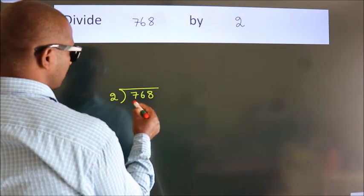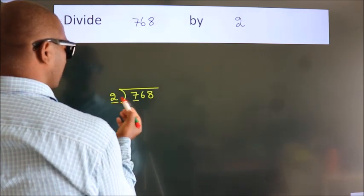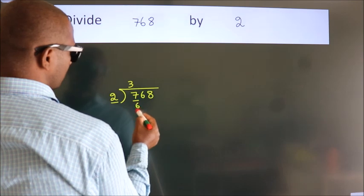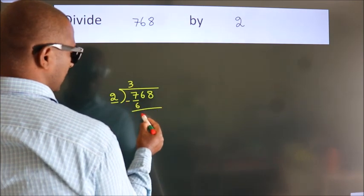Here we have 7. Here 2. A number close to 7 in the 2 table is 2 threes, 6. Now we should subtract. We get 1.